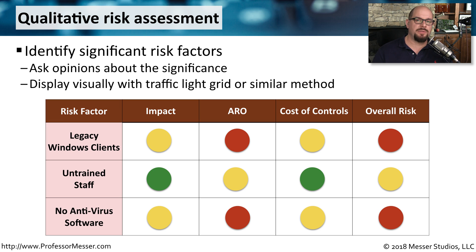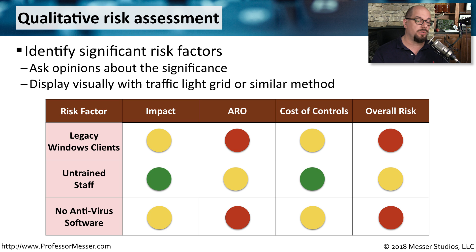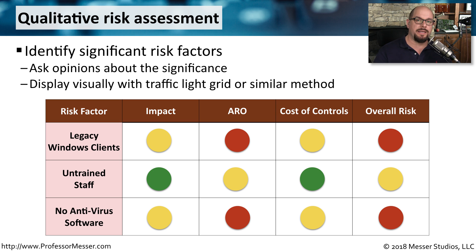For risks such as losing a laptop, there's an obvious cost associated with that. But for other types of processes where you're not able to put a quantitative analysis on those steps, you'll want to use a qualitative risk analysis to determine where the risk may be. One way to perform a qualitative risk assessment is to identify different risk factors and categories of risk, which may include impact, annualized rate of occurrence, cost of controls, and an overall risk value. You may give those values between 1 and 10, or use a traffic light grid with red, yellow, or green to determine how risky these might be.